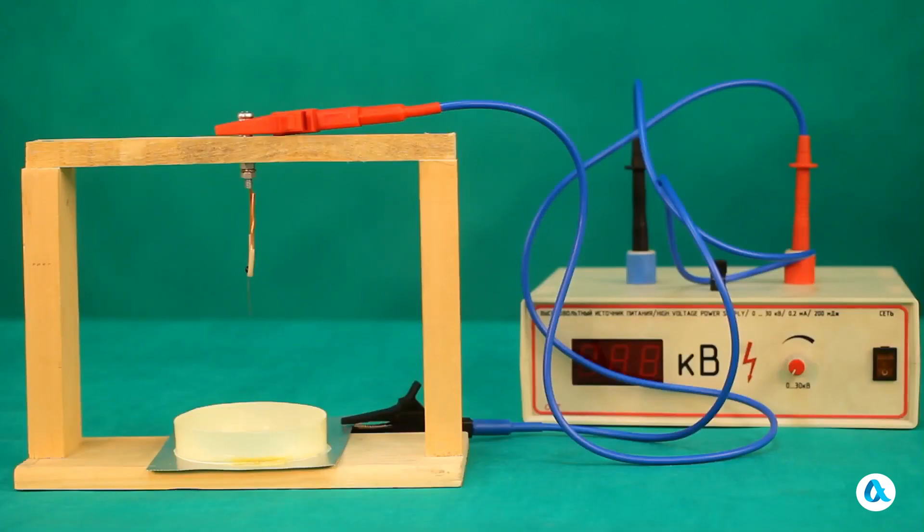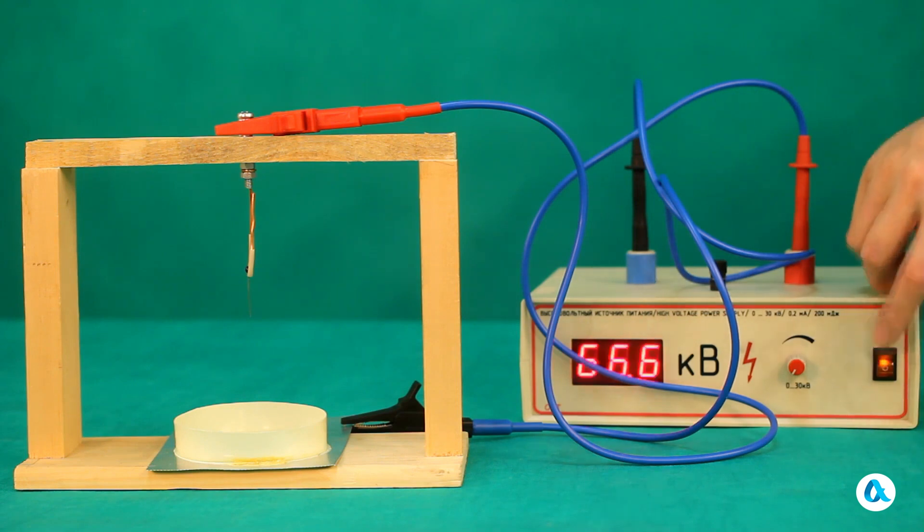Let's attach a plastic rim to a metal plate and place a thin needle above it. We'll connect the plate to the negative terminal and the needle to the positive terminal of a high-voltage power source.